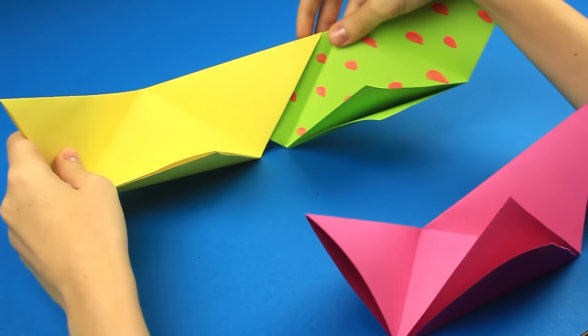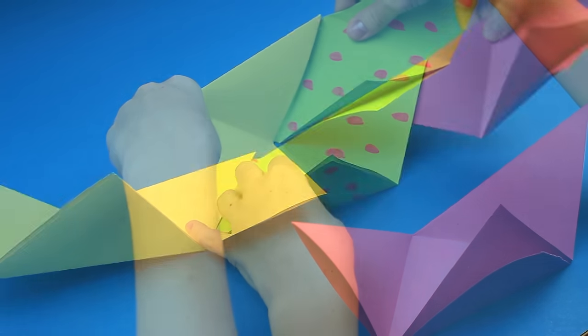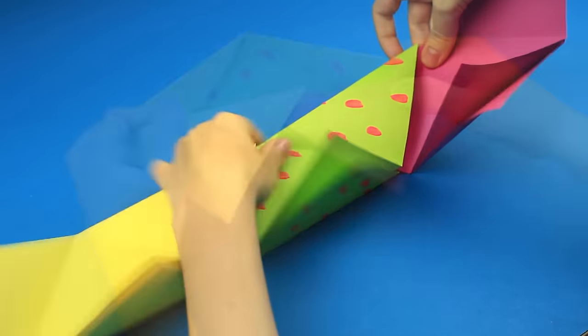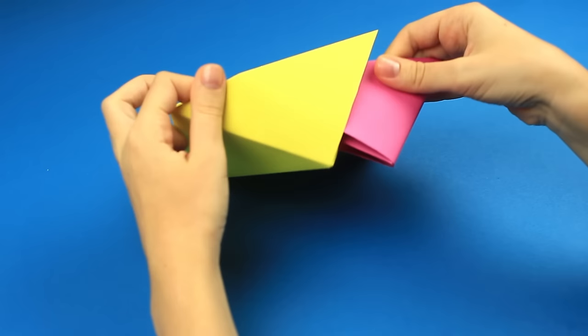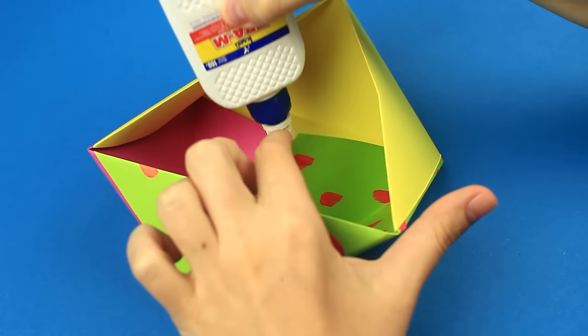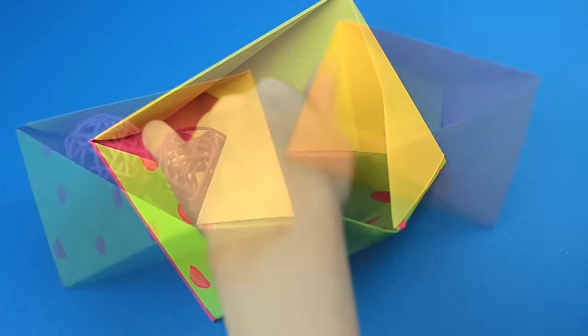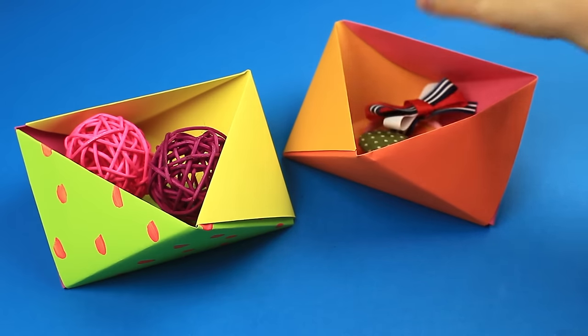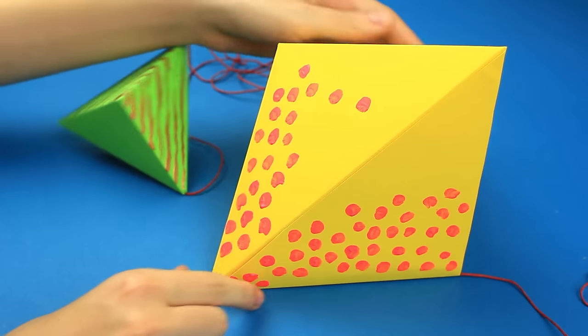Assemble the construction putting one part into another. Join the edge sides and glue the bottom. The smart paper boxes will be useful on the desk to keep small stuff in.